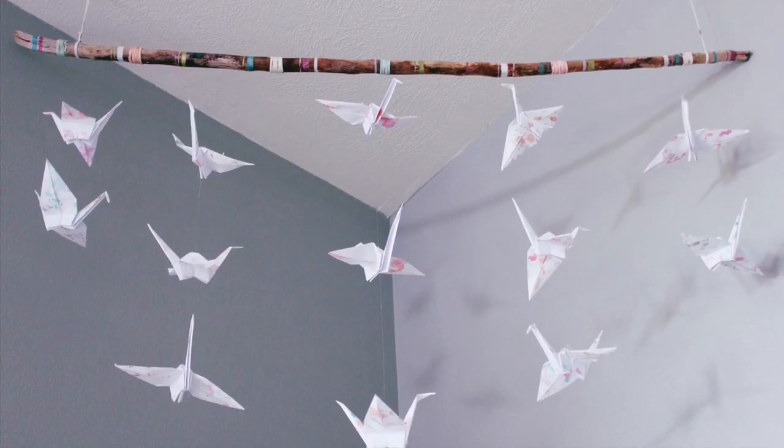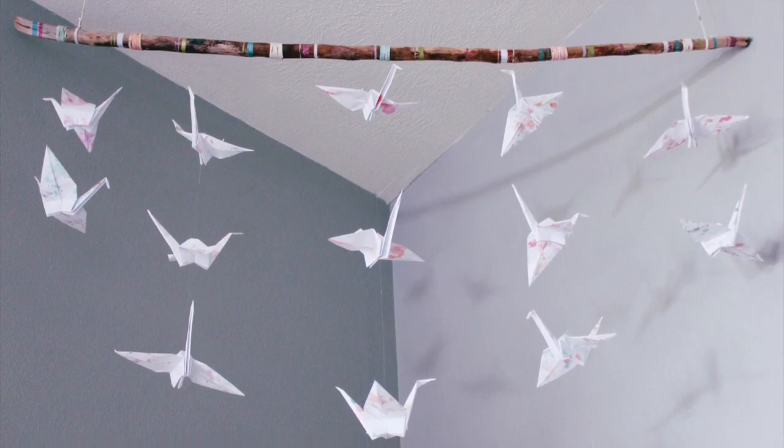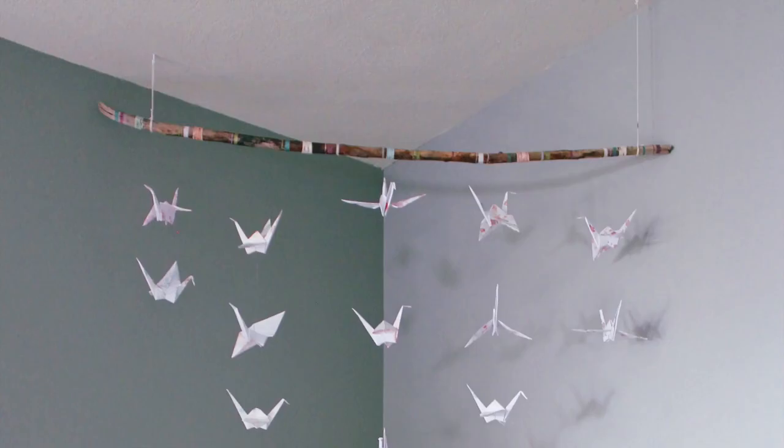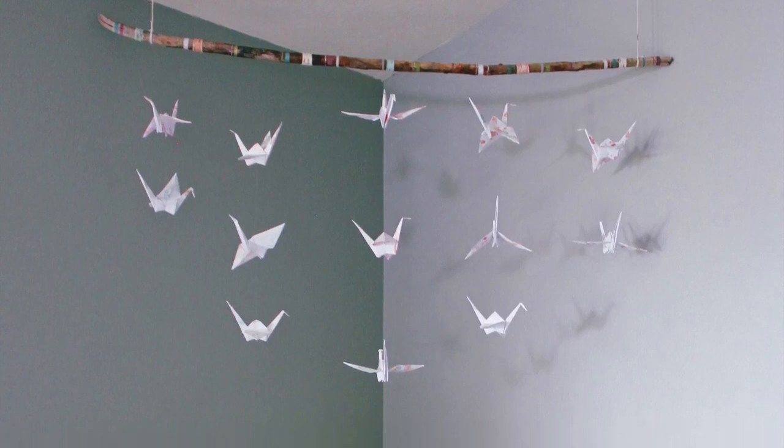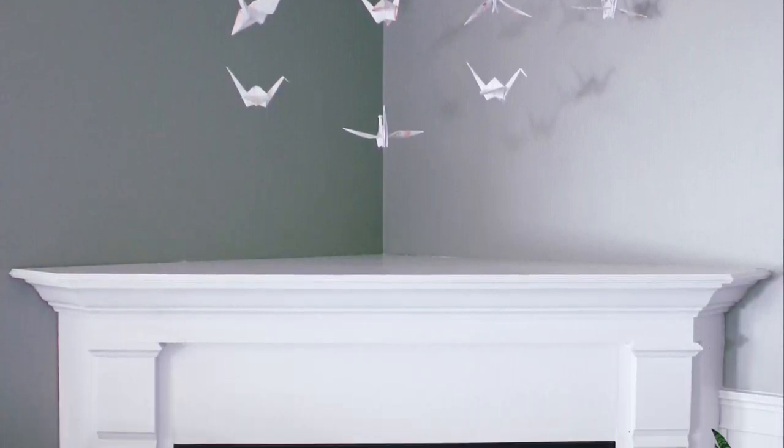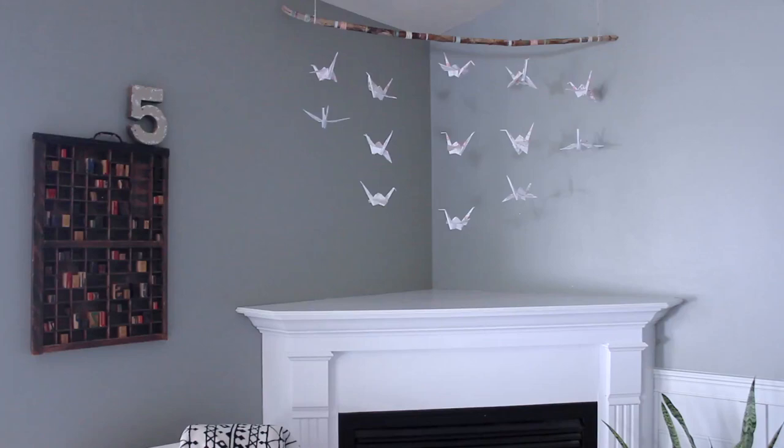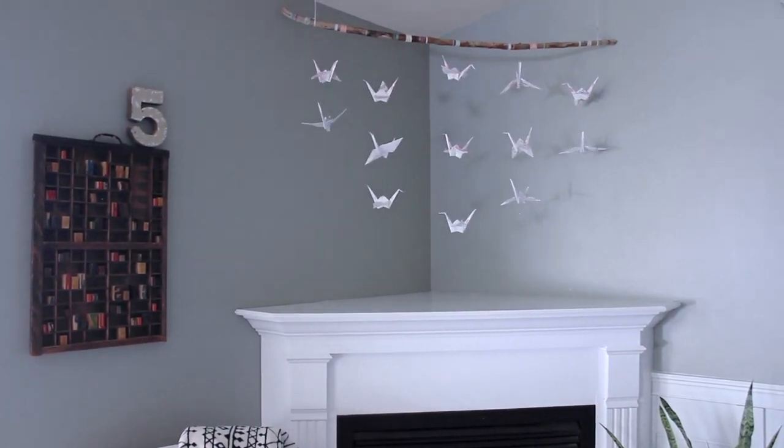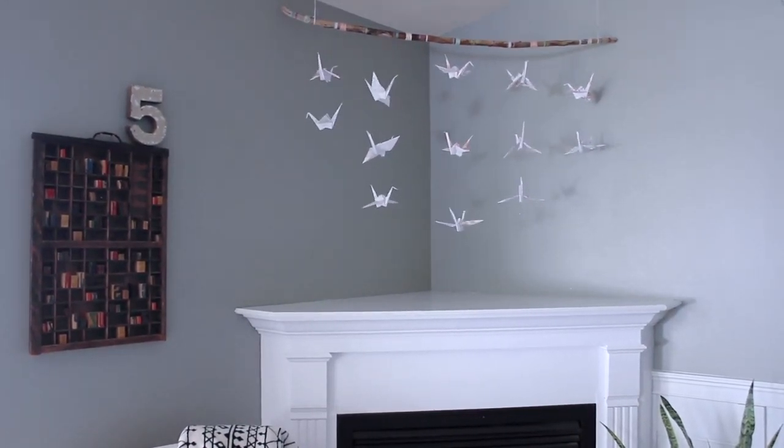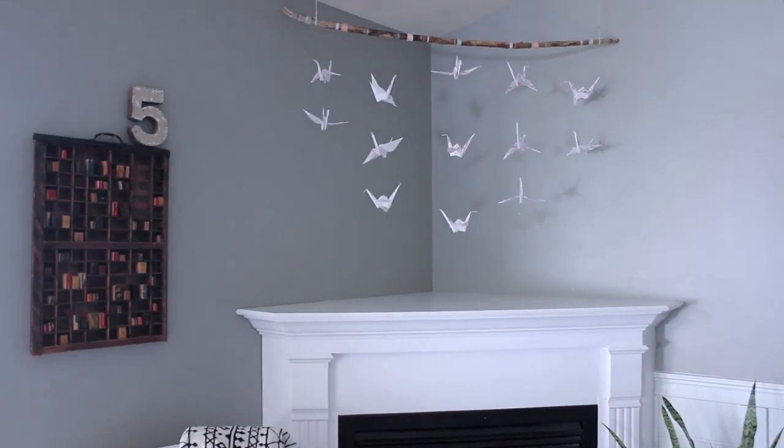Tie the strands to the stick, or use a dab of hot glue on the back of the stick to secure it. I found it's easiest to attach these strands when the stick is already hanging in place. I used two ceiling hooks and some yarn to hang the stick over my fireplace. I added five strands of cranes with the longest one being in the center.